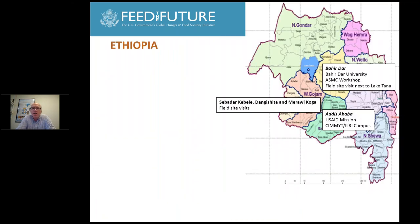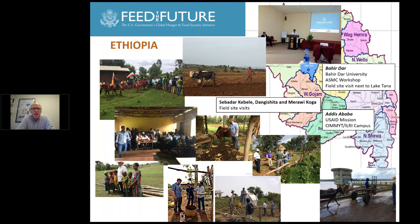In Ethiopia, we are connected with Bahir Dar University at Bahir Dar, which is up north on the edge of Lake Tana. Addis Ababa is where the USAID mission is located, and we've connected with Simet as well. We've also had field visits near Bahir Dar. Going into the community there was really interesting and our workshop went very well.